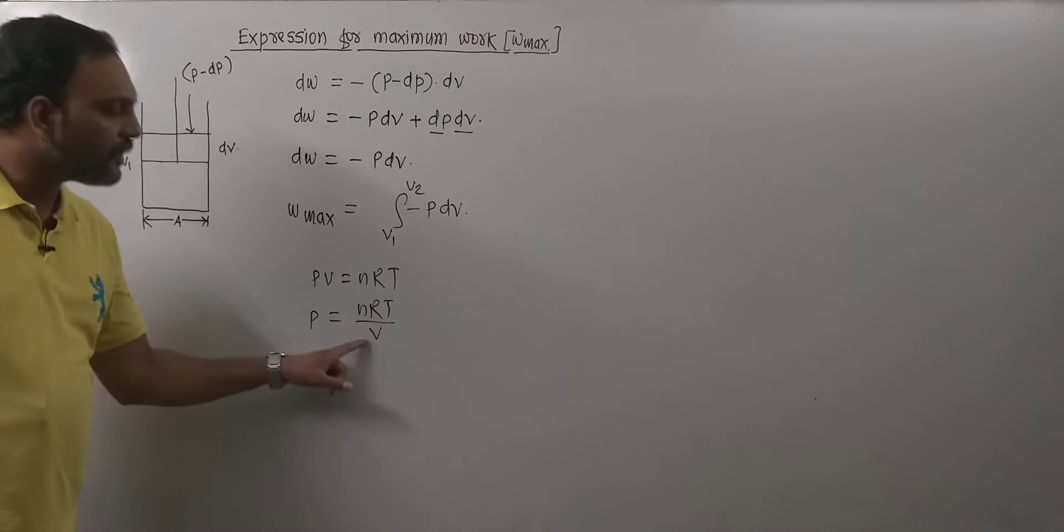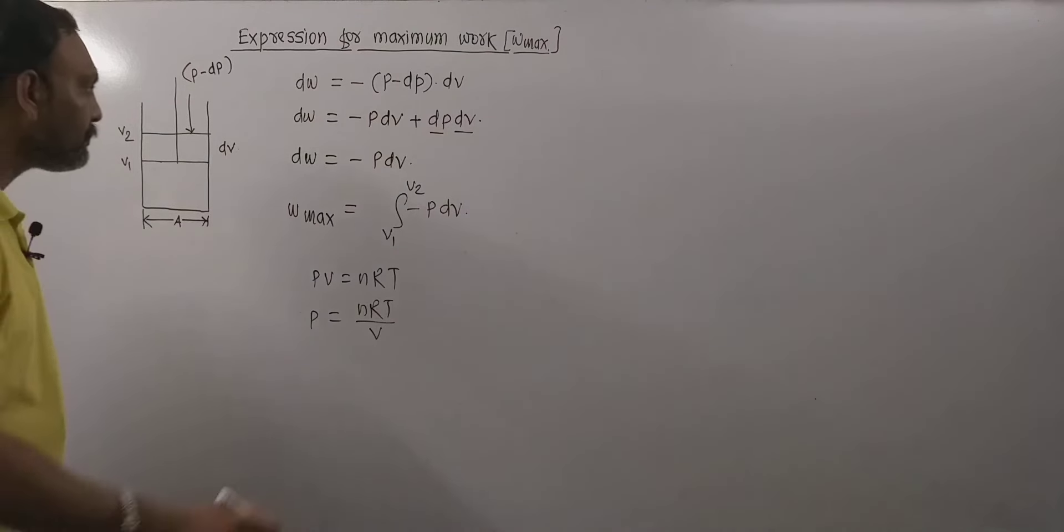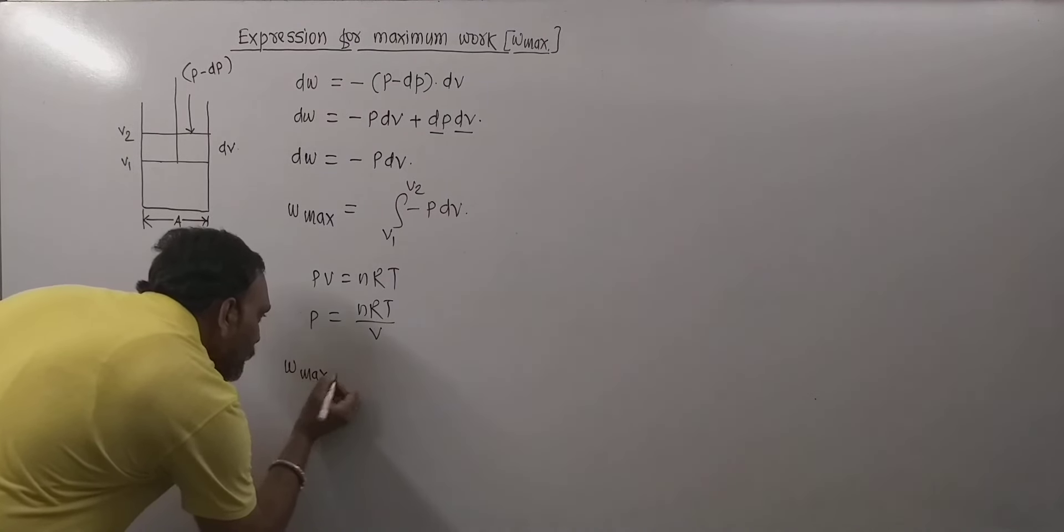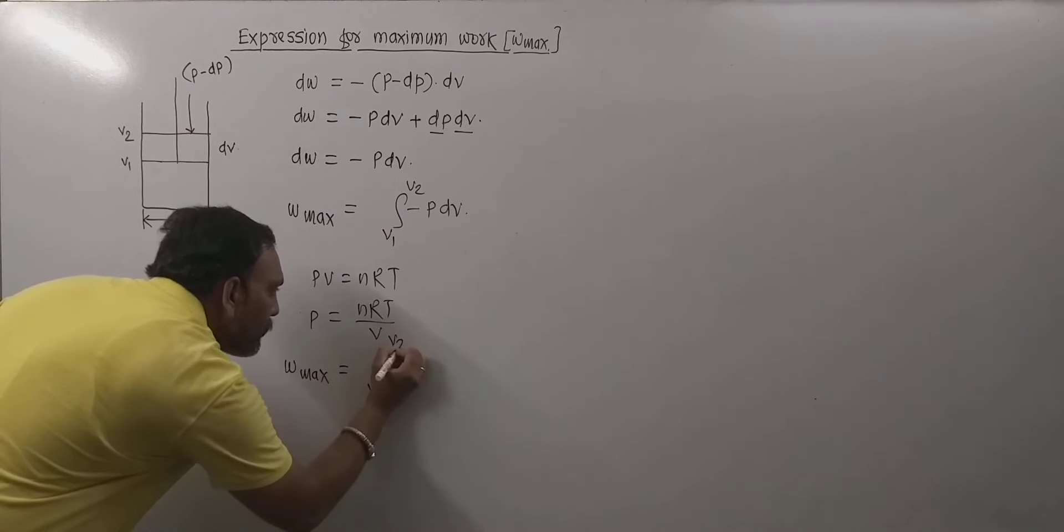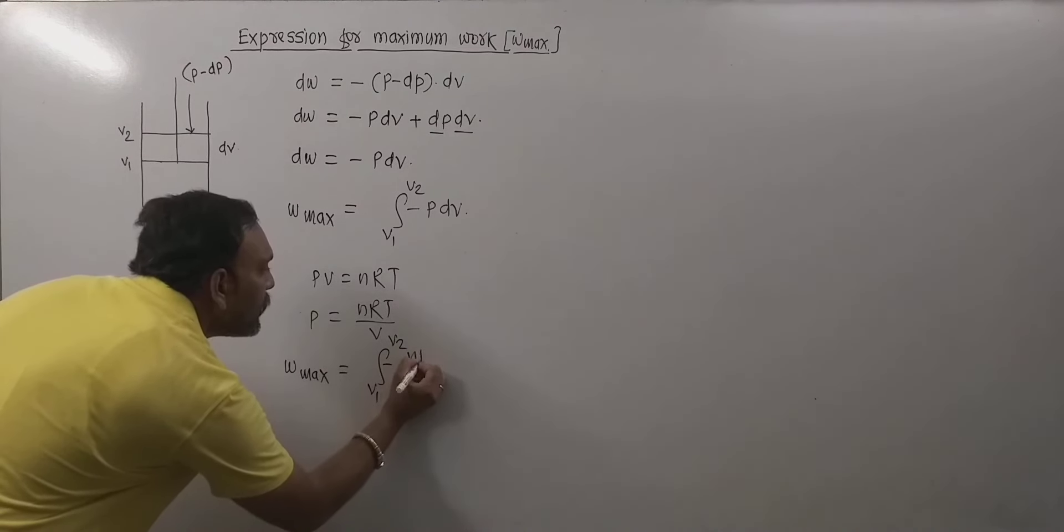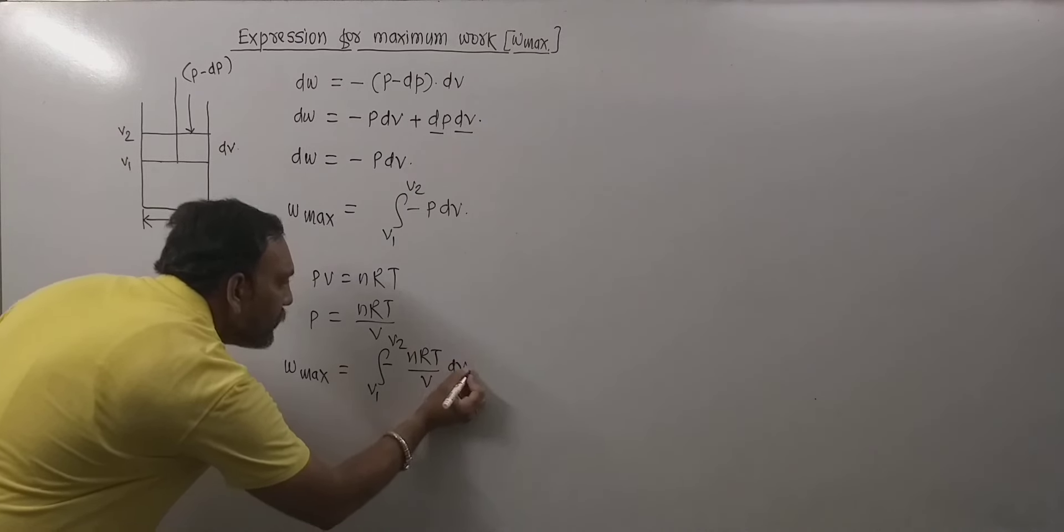Now by substituting this value in this equation, we get w_max equals integration between limits v1 to v2 of minus nRT by V dV.